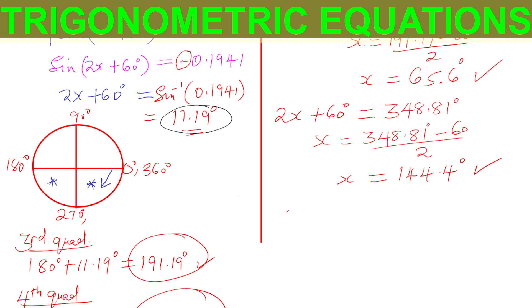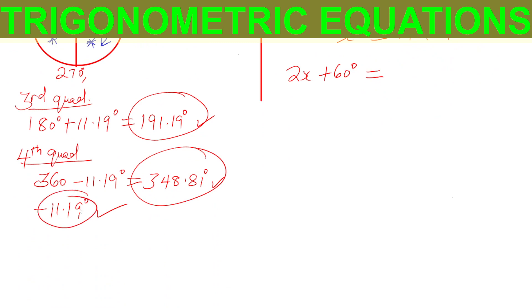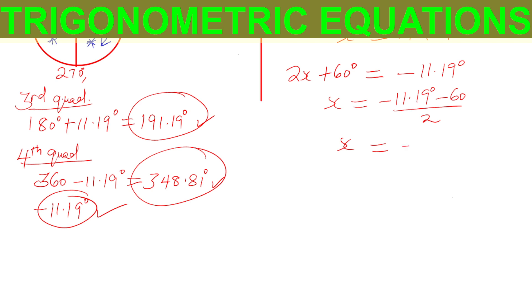For the last angle: 2x + 60° = negative 11.19°. So x equals (−11.19 − 60) ÷ 2, which gives negative 35.6 degrees.